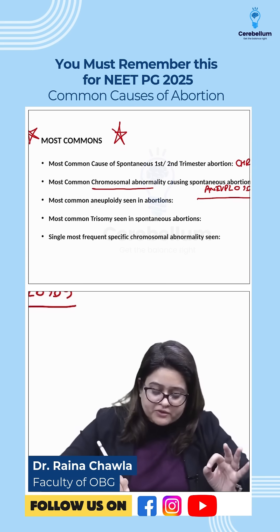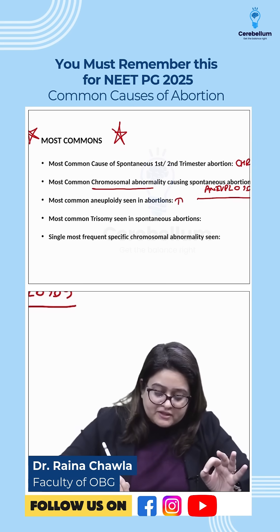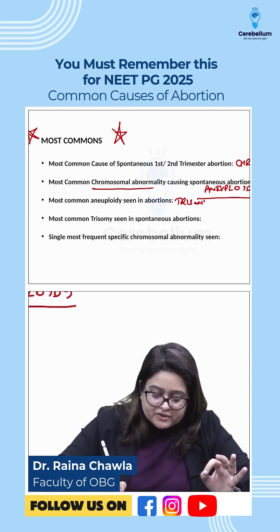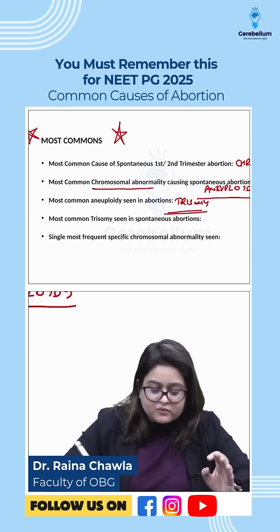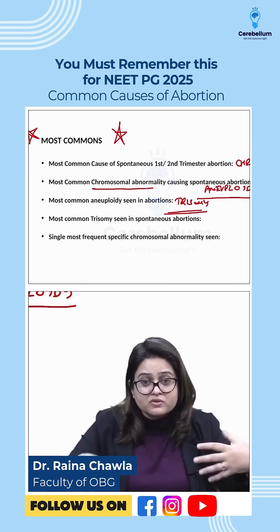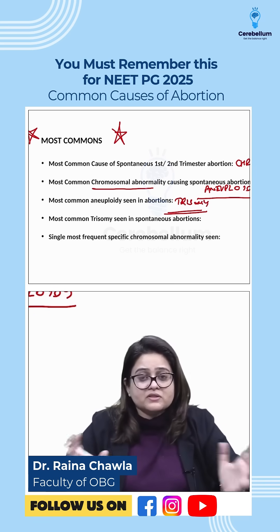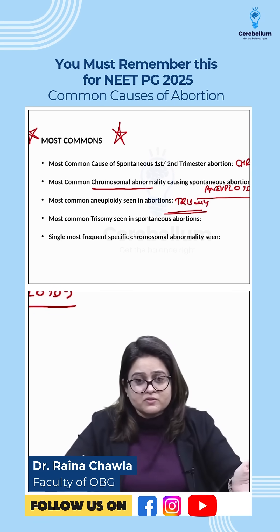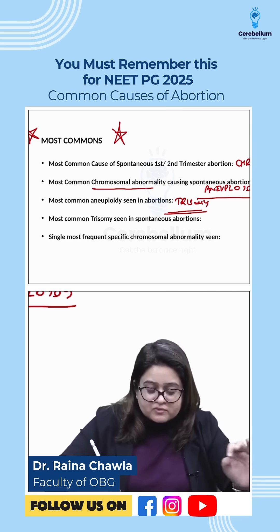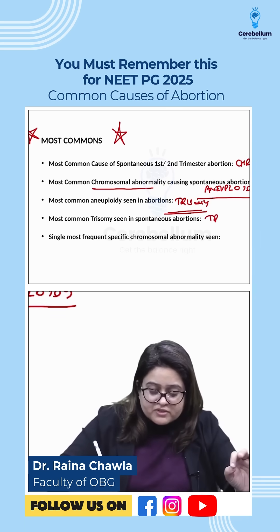What is the most common aneuploidy? The most common aneuploidy is a trisomy. And what is the most common trisomy amongst all trisomies which cause abortions? The most common trisomy is trisomy 16.